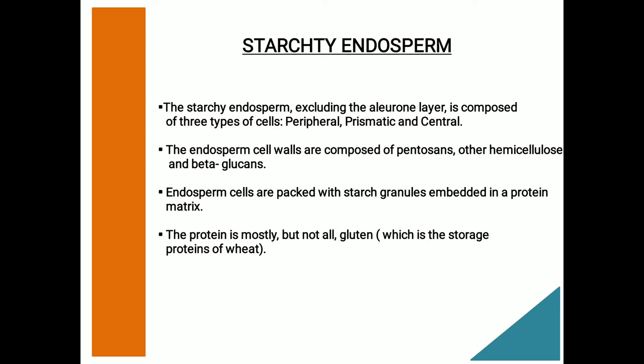The contents and cell walls of the endosperm make up wheat flour. The cells are packed with starch granules embedded in a protein matrix. The protein is mostly gluten, which is the storage protein of wheat. The strength of the protein-starch bond explains the kernel hardness. In soft wheat, the protein-starch bond ruptures easily and the kernels get crushed with minimal force. In harder wheat, the protein-starch bond is progressively stronger.